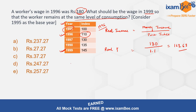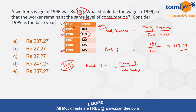Now let's see what would be his real income in 1999. The real income in 1999 would again be money income divided by whatever is the price index in that year. The money income we don't know, so let's say it's X. This divided by the price index, which is 1.45.